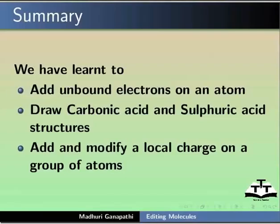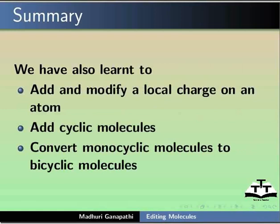Let us summarize. In this tutorial we have learnt to add unbound electrons on an atom, draw carbonic acid and sulfuric acid structures, add and modify a local charge on a group of atoms, add and modify a local charge on an atom, add cyclic molecules, and convert monocyclic molecules to bicyclic molecules.